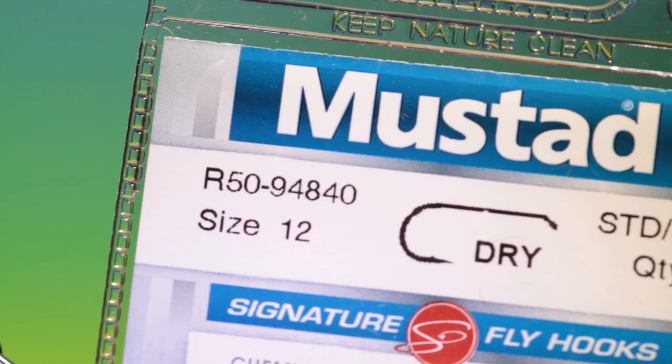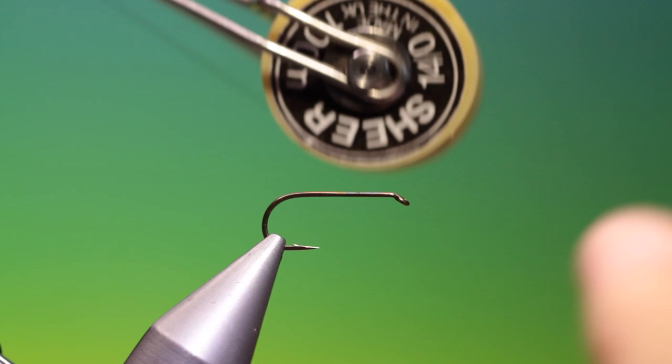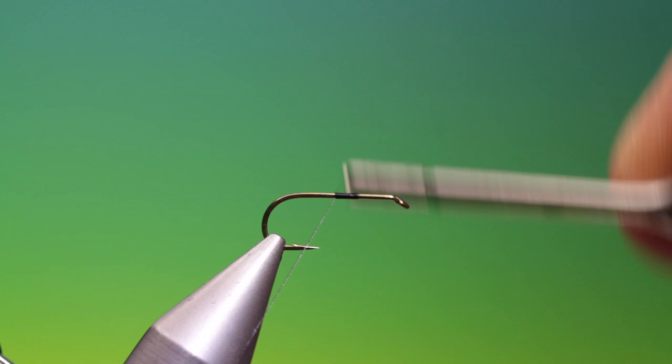We'll start with the Mustard R50, a 94840 Slice 12 dry fly hook. I've got some sheer black thread. For this La Fontaine Emergent Sparkle Pupa, we'll attach our tying thread at the midpoint there and remove that.